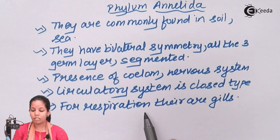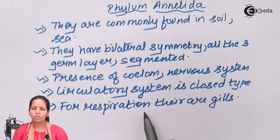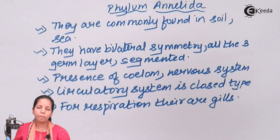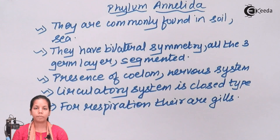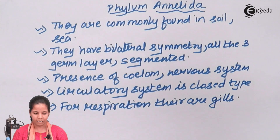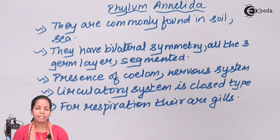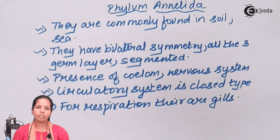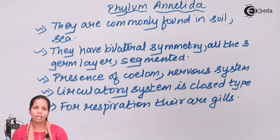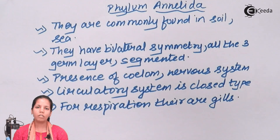For respiration, these organisms have gills. Reproduction takes place through sexual processes. Asexual reproduction is never seen in annelids. They could be hermaphrodites, exhibiting this reproductive quality. The closed type circulatory system also allows a lot of ATP generation inside their body.